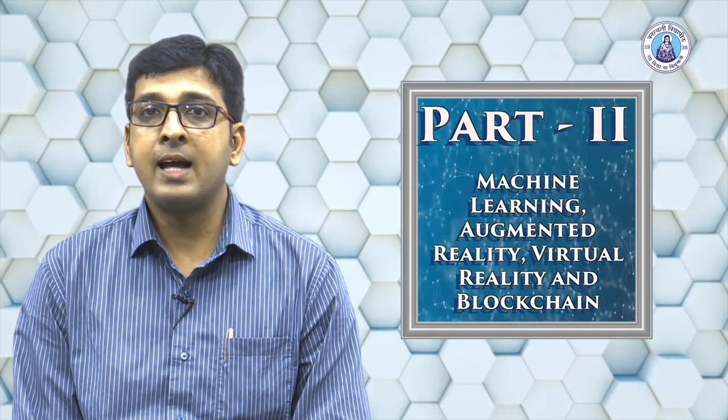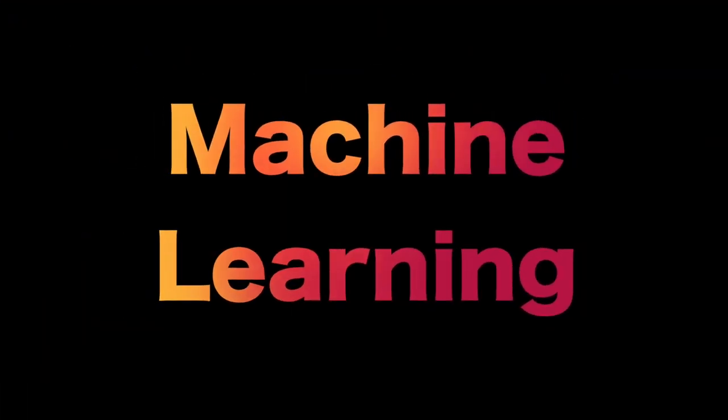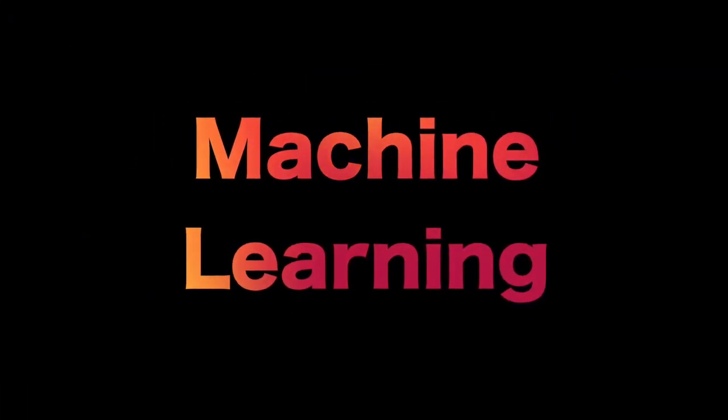In the first part of the module, we discussed about three technologies: artificial intelligence, internet of things, and big data. Now in the second part, we will be covering four emerging technologies: machine learning, augmented reality, virtual reality, and blockchain technology. So we begin this module with machine learning.